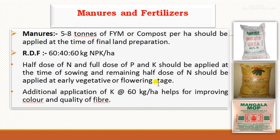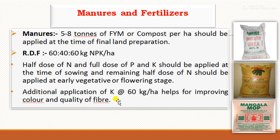For manures and fertilizers, both white and Tossa jute require 5 to 8 tons of FYM or compost applied at the time of final land preparation. The recommended dose of fertilizer is 60:40:60 kg NPK per hectare — half dose of nitrogen and the full dose of P and K should be applied at sowing, and the remaining half dose of nitrogen at the early vegetative or flowering stage. Additional application of potassium at 60 kg per hectare helps improve fiber color, texture, length, and staple length, thereby improving the market price of the product.